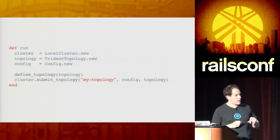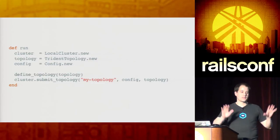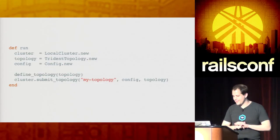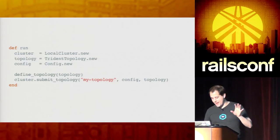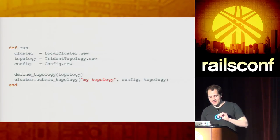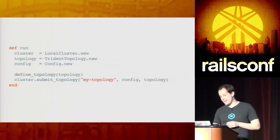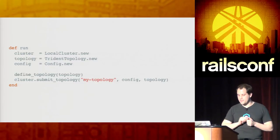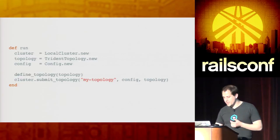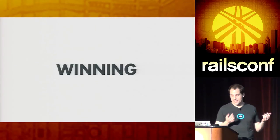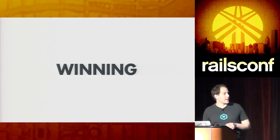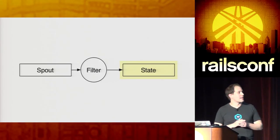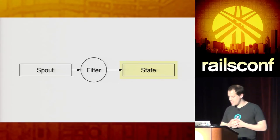The actual amount of code to get it started is just this: you initialize a new cluster object, define a new Trident topology, initialize a config, call our defined topology method, pass in the topology, and submit it to the cluster — which is just your locally running machine. The entire thing is running. But only a little bit winning, because we're not doing anything with the data yet. The next step is going to be to persist the results.